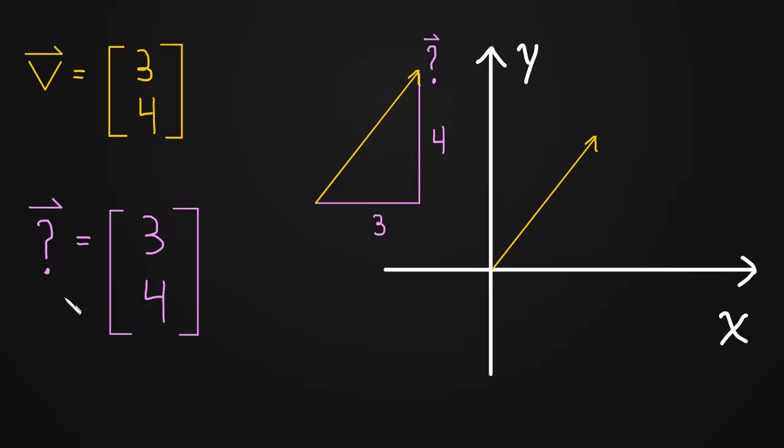So this question mark vector has the same direction and the same length, which is the same thing as saying it has the same components as v. And so this new vector must be v. It's no longer a question. This is the vector v.